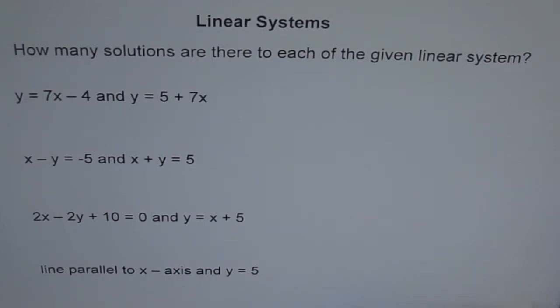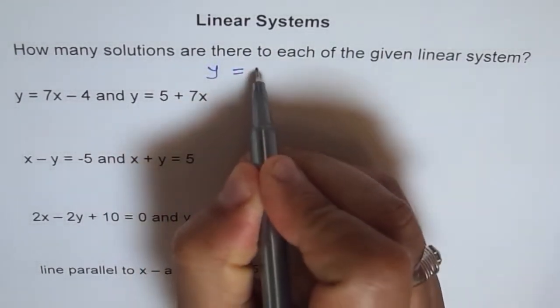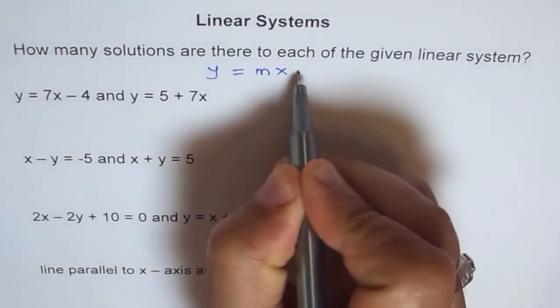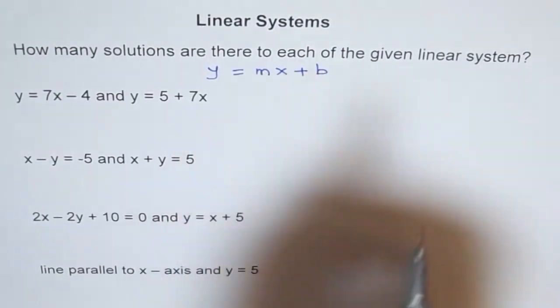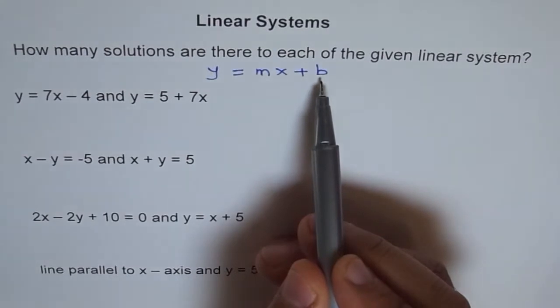So the best way to solve this problem is to write your equation into slope-intercept form. I hope you remember slope-intercept form. Slope-intercept form is y equals to mx plus b, where m is the slope and b is the y-intercept.